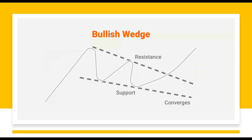Then we come to bullish wedges, which to me fit into what I call triangles — asymmetrical, ascending, descending. Bullish wedge, bearish wedge, bullish pennant, bearish pennant — they're all two angular lines moving into each other.